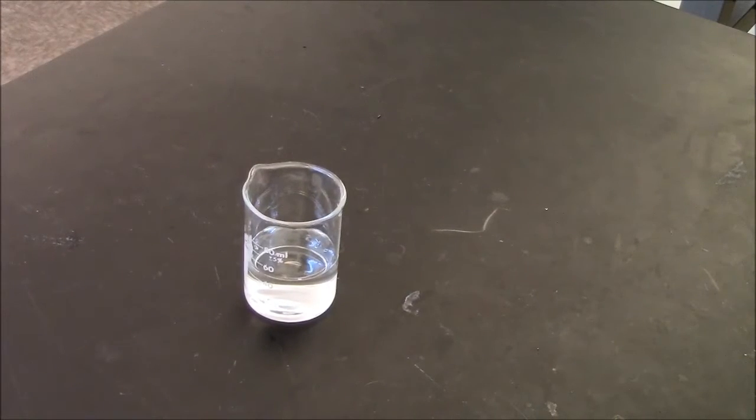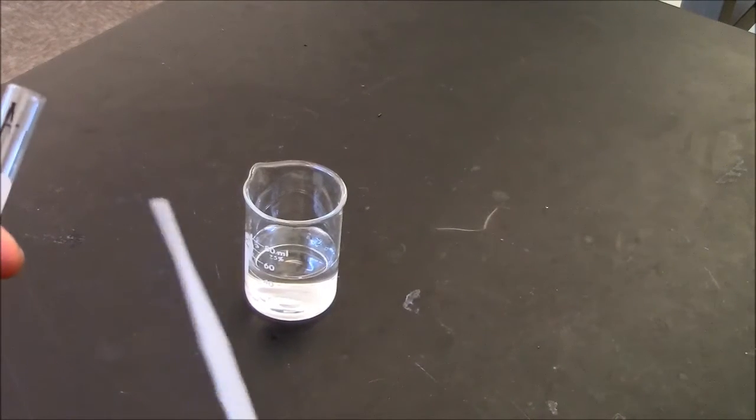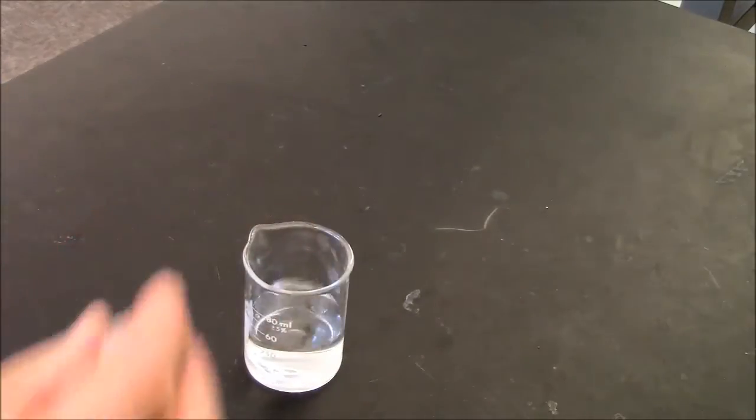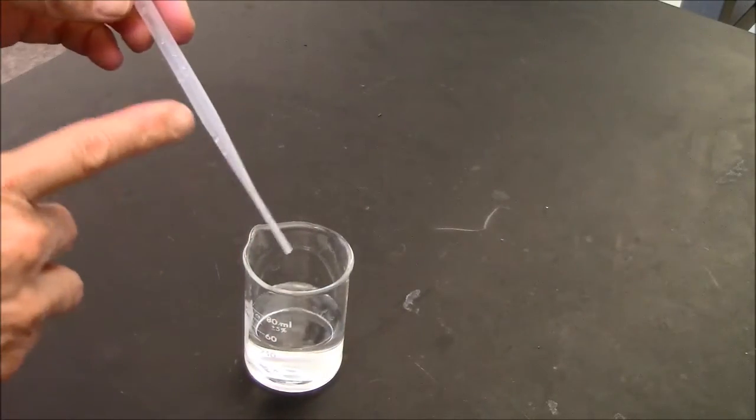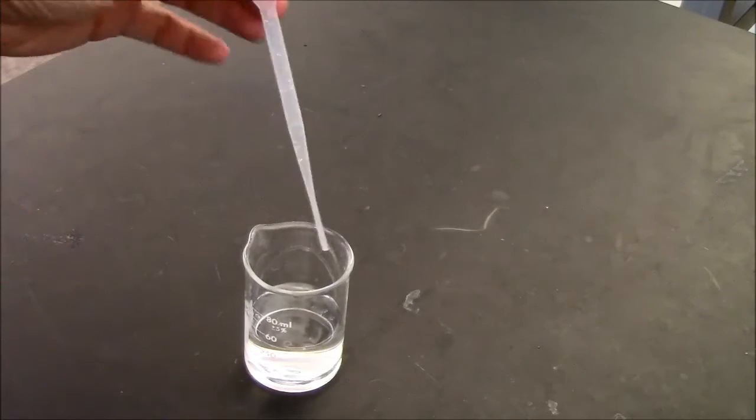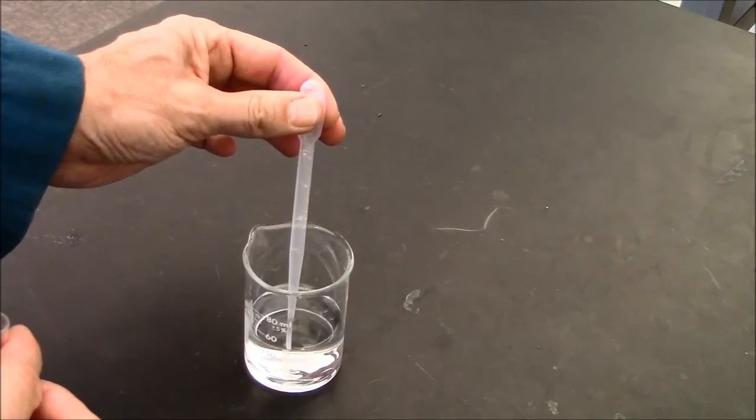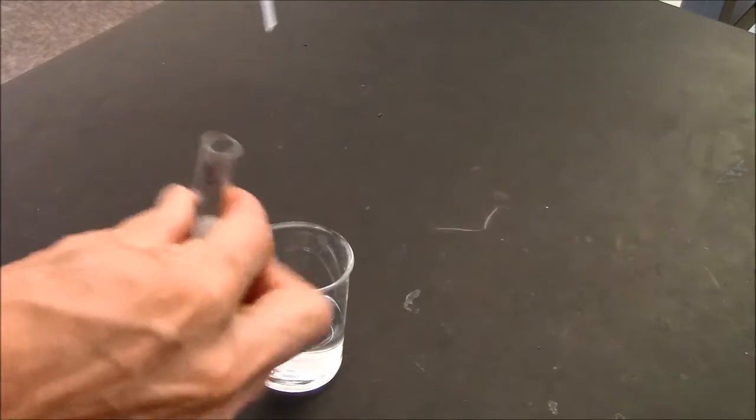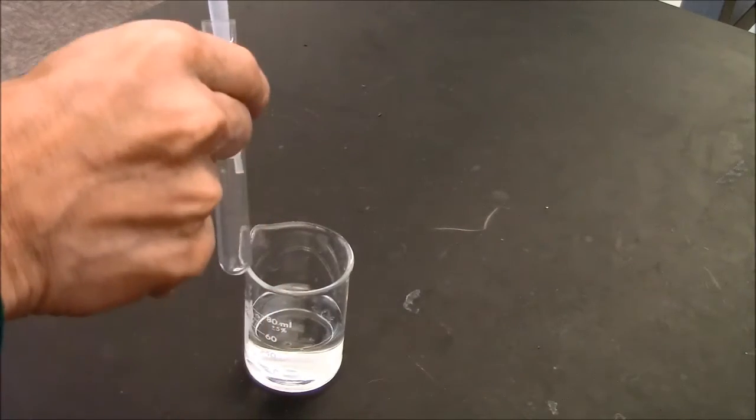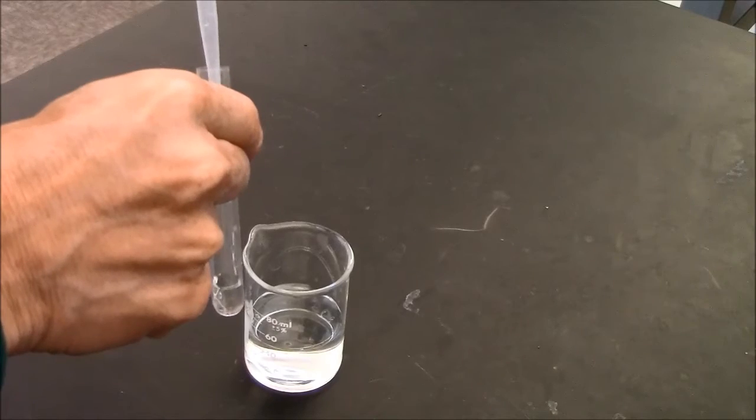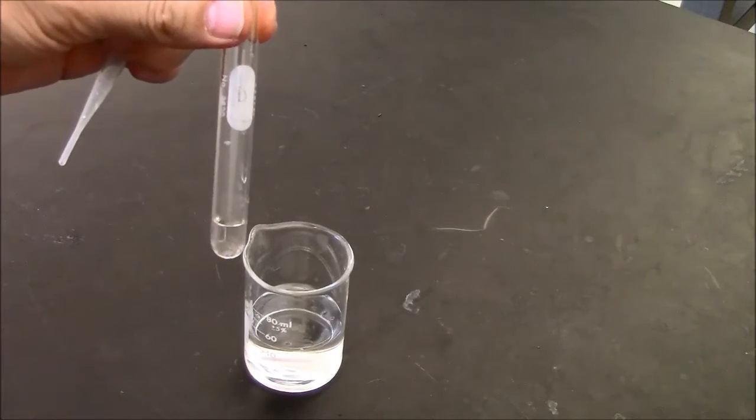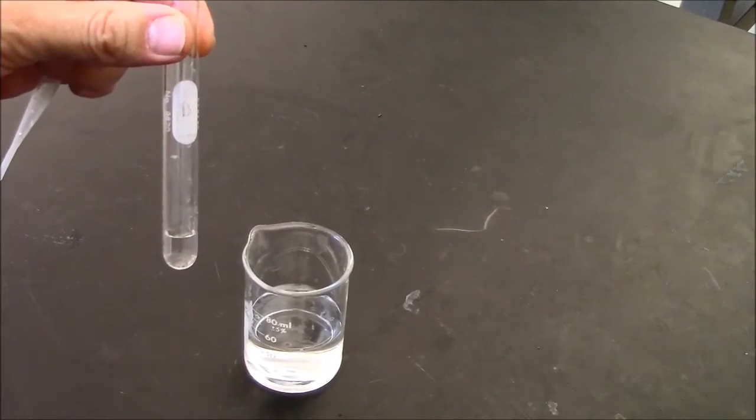If you're doing the color test, volume matters. So use one milliliter. You'll remember that the pipette has a line in the middle. This is one milliliter. And if you transfer that precise volume to your test tube, then this is great for the drops of ammonia, five drops of ammonia.